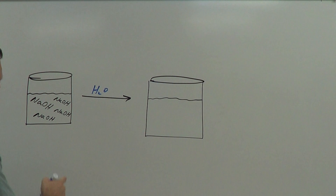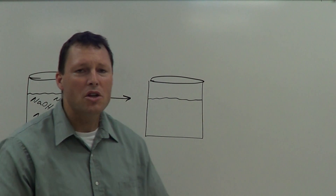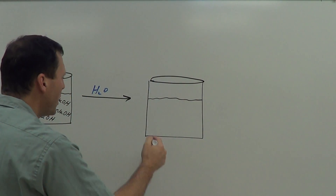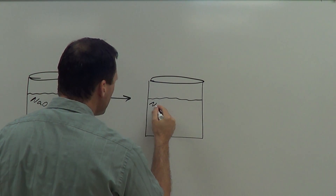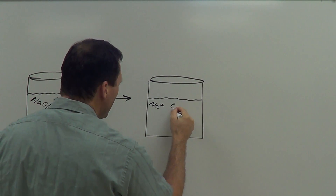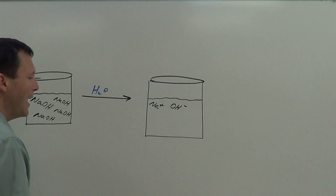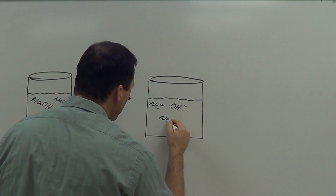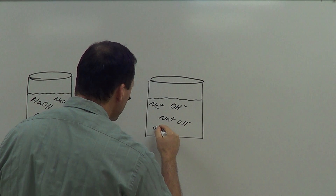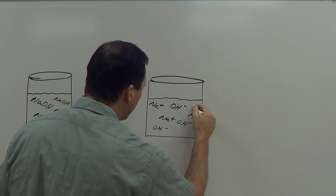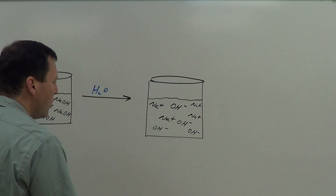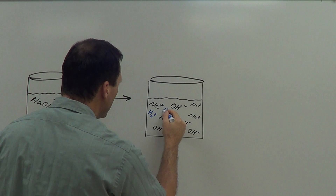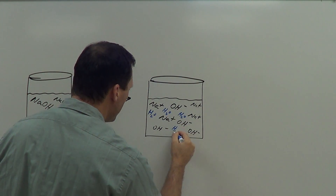The water is going to break the chemical bond between the sodium and the oxygen — again, breaking that bond unevenly. We end up with positively charged sodium ions and a negative hydroxide ion. We're going to have lots of these floating around in solution, along with water molecules, because this is all in a solution of water.